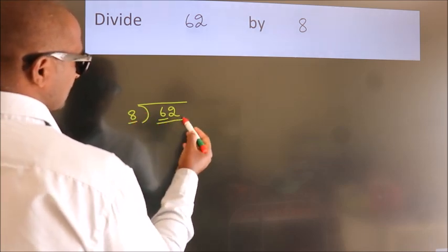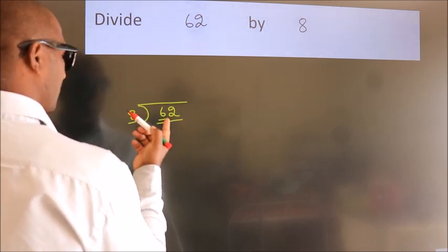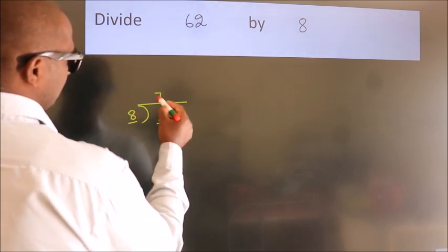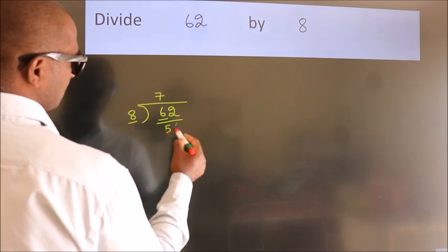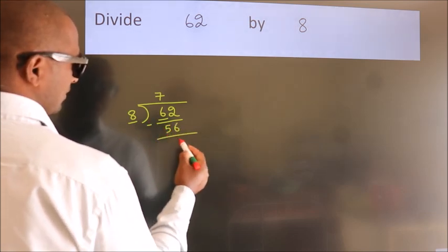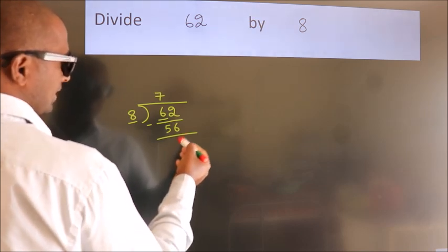62. A number close to 62 in the 8 table is 8 times 7 equals 56. Now we should subtract. We get 6 after this.